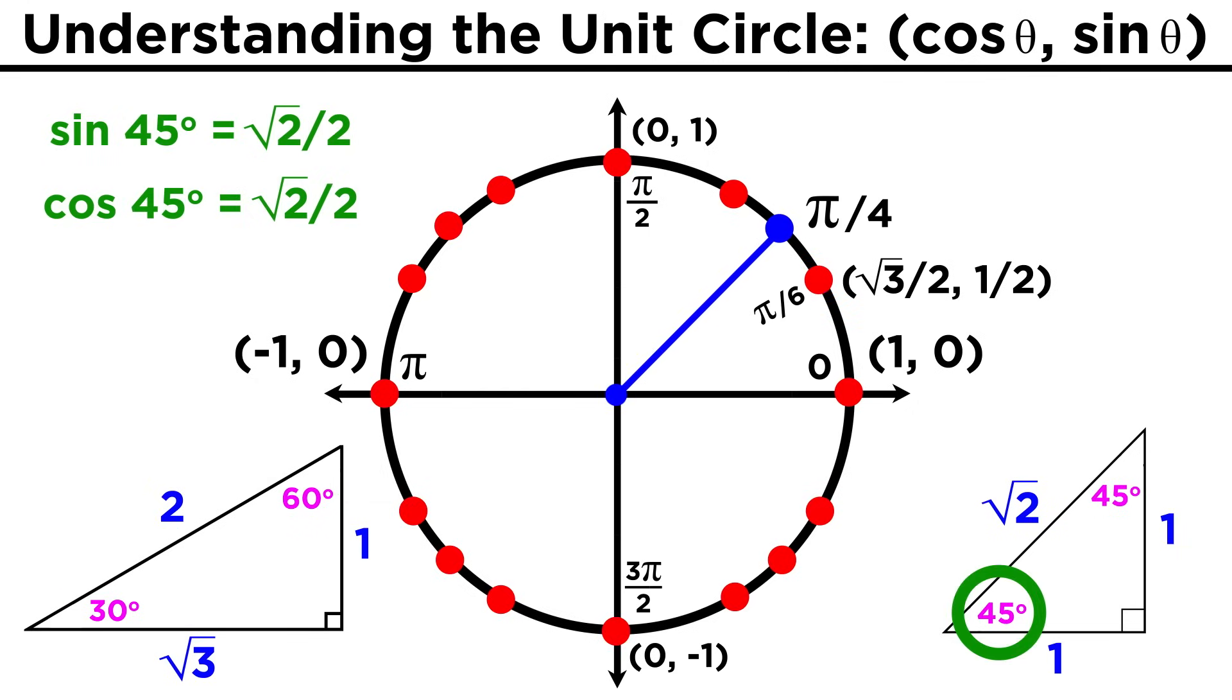For π/4, we have this other special triangle, and both the sine and cosine of forty-five degrees are √2/2. So these are the coordinates of this point.